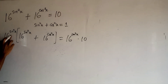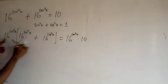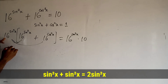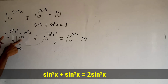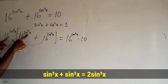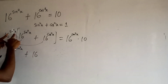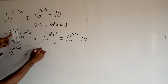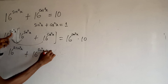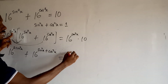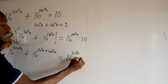If I distribute 16 to the power sin squared x into all these terms, from the law of indices, when multiplying with the same base, you add their powers. So we have 16 to the power sin squared x plus cos squared x on the left side, and 16 to the power sin squared x times 10 on the right.